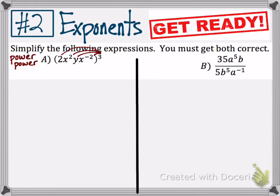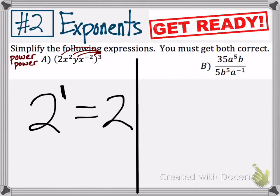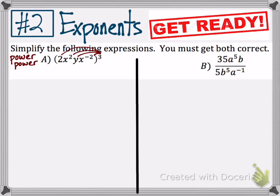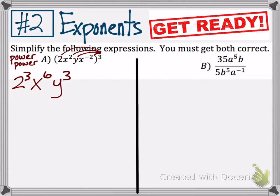If a number does not have an exponent, like the 2 in this example, its exponent is 1 — any number raised to the first power is itself. Using the power-power rule with the outer 3: the 2 has exponent 1, so 1 times 3 gives 2 to the 3rd. The x-squared has exponent 2, and 2 times 3 is 6. The y variable has exponent 1, and 1 times 3 is 3. The x to the negative 2 gives negative 2 times 3, which is negative 6.